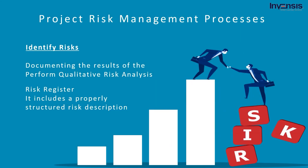Now we will discuss documenting the results of the identify risks process. It is important to record the identify risks process results to capture all relevant information currently available for each identified risk. The only output from the identify risks process is the risk register. The risk register includes a properly structured risk description and the nominated risk owner for each risk, and may also include information on the causes and effects of the risk, trigger conditions, and preliminary responses.